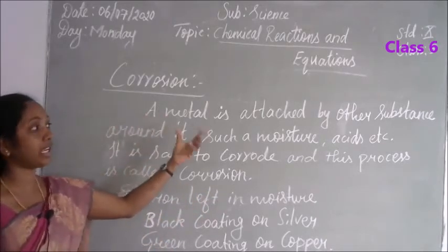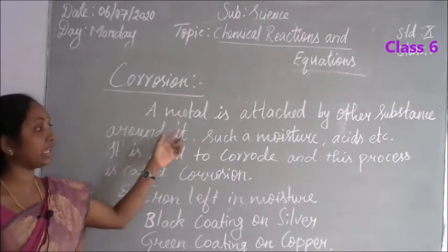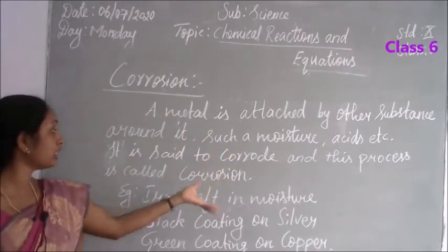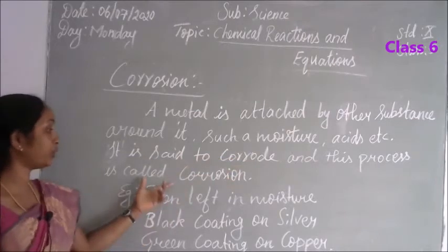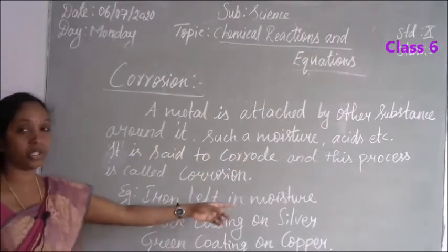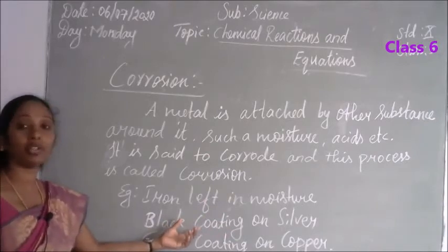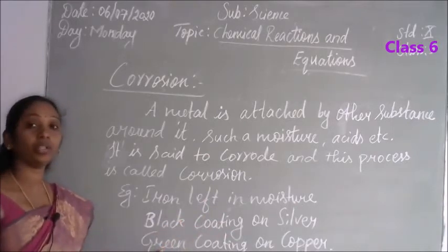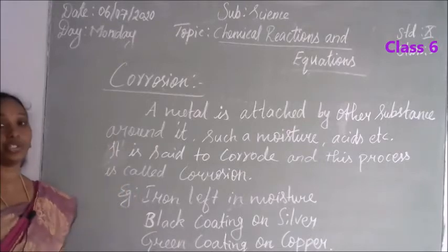A metal is attacked by other substances around it such as moisture, acid, or salt — that is called corrosion. Examples: iron left in moist outside atmosphere, black coating upon silver, and green coating upon copper.